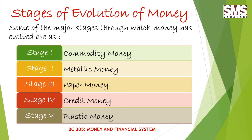There are five stages in the evolution of money. Stage one: commodity money. Stage two: metallic money. Stage three: paper money. Stage four: credit money. And stage five: plastic money.